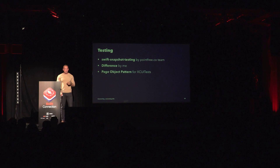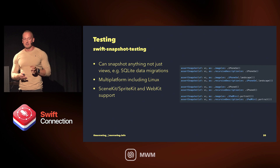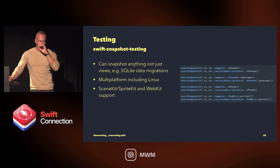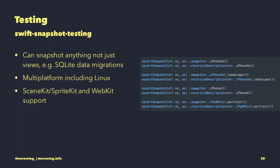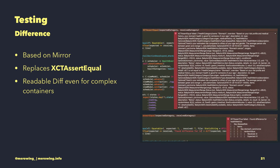There are three main things I use. First, snapshot testing — the Point-Free library that replaces Facebook's snapshot tests. It's multi-platform including Linux, supports all Apple frameworks, and also supports testing beyond just screenshots. For example, if you use GRDB — which is one of the best open source SQLite wrapper libraries — it has support for snapshotting migrations, so you can easily write tests that verify your database migrations work correctly. The only downside is your repo size will grow because of image files in the repo.